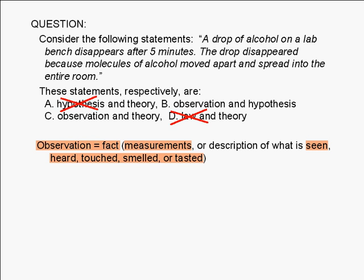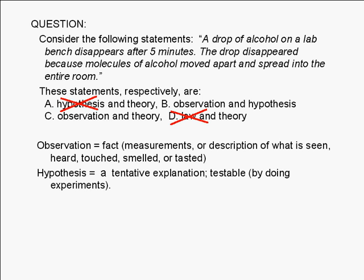So choices A and D are wrong. The second statement is an attempt to explain why the drop of alcohol disappeared. A statement that attempts to explain one or more observations is called a hypothesis. Therefore, the correct answer is B. We say that a hypothesis is testable because it is subject to testing — we conduct experiments to test a hypothesis.